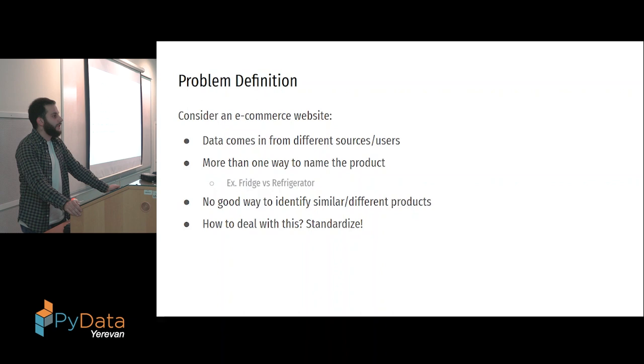Let's define what is insufficient data. Consider an e-commerce website where data comes in from different sources. The same product could be named in different ways. For example, there's a fridge and a refrigerator, which both mean the same thing, but they're spelled differently. If you calculate the distance using naive string distance algorithms like Levenshtein distance, you wouldn't have much luck because these two are very far apart. There's no good way to understand that fridge and refrigerator mean the same thing. The solution is to standardize the data.